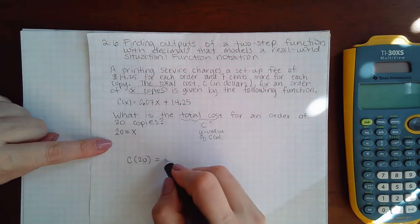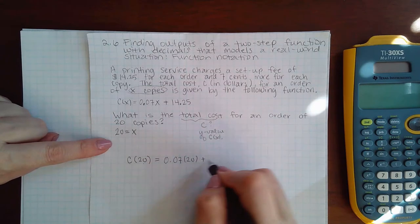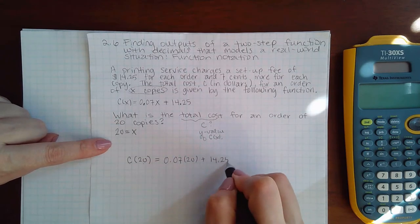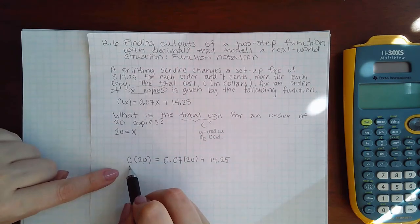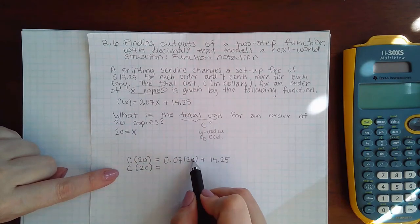To find that, all I need to do is take that function and plug in the 20. This is the cost of 20 copies, and that would be...